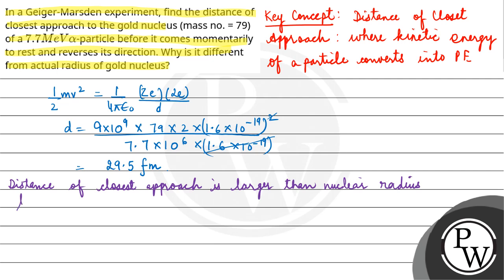This is because of the repulsive electrostatic force between the alpha particle and the charged atomic nucleus. Because both have positive charges, there will be repulsion between them.